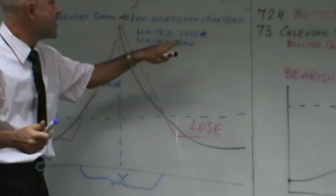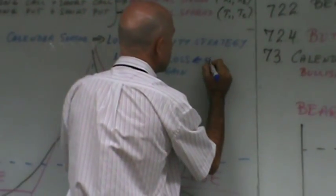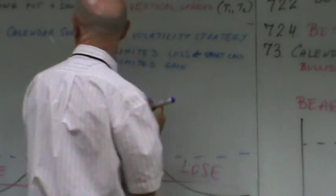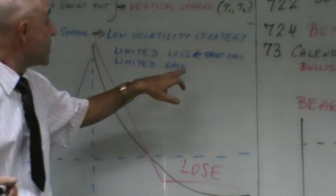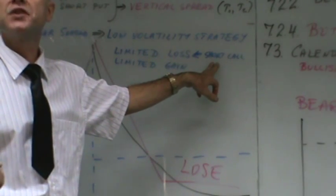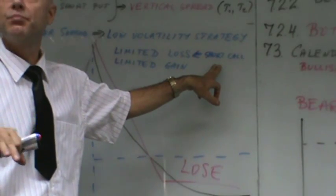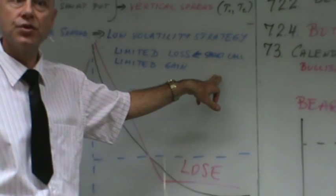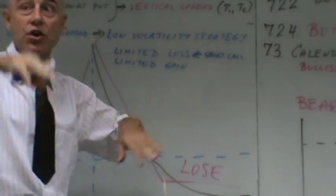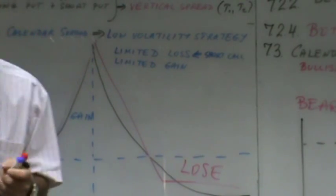The limited loss comes from the fact that you're short a call. You have one long call and one short call. The short call lowers your overall cost and lowers your overall profit. But the limited gain also comes from the short call — it prevents you from making extra money. The short call offsets your potential gain but also reduces your overall risk.